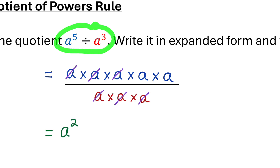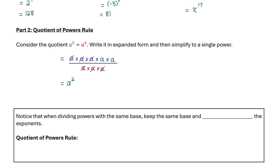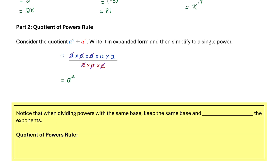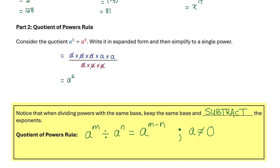Notice that to get from the original quotient to the simplified single power, I kept that base of a the same but subtracted the exponents: 5 minus 3 equals 2. The general rule for the quotient of powers: when dividing powers with the same base, we keep the same base and subtract the exponents. So a to the power of m divided by a to the power of n equals a to the power of m minus n. Because division by zero is undefined, a cannot be zero for this rule to apply.